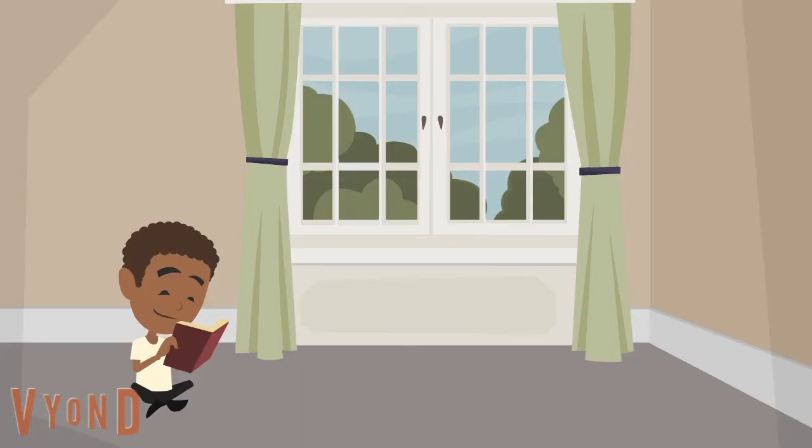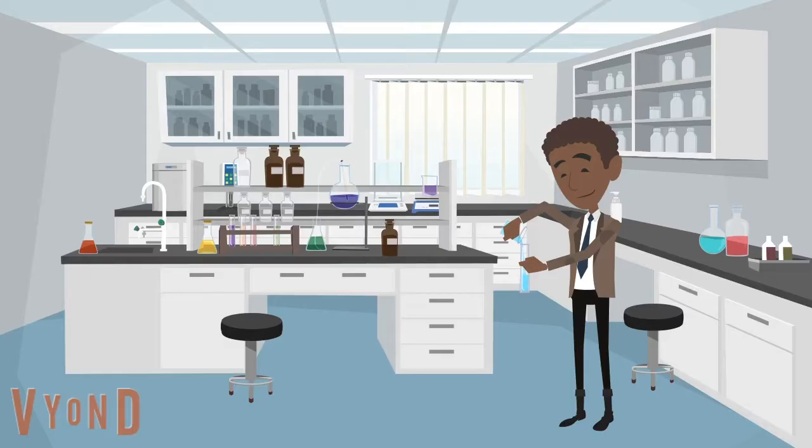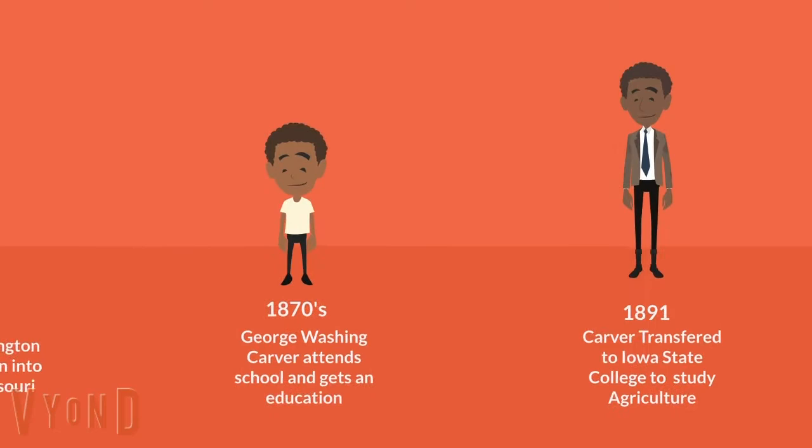George loved to read, explore the world around him, and study plants. As he got older, he wanted to become a scientist. He went to college to study farming and how to grow food.